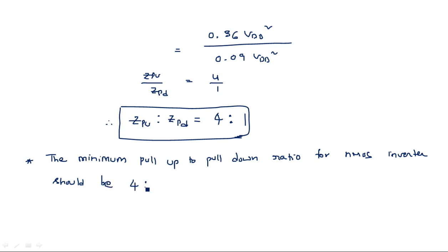Therefore the minimum pull-up to pull-down ratio for an NMOS inverter should be 4 is to 1. In the next video I will explain the pull-up to pull-down ratio of the NMOS inverter driven by one or more power transistors. Thank you.